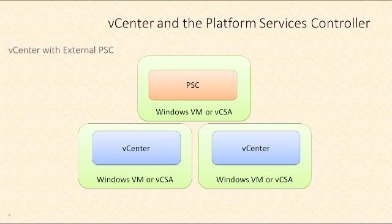Our second deployment option is vCenter with an external platform services controller. We can break out the PSC as an independent machine, and this configuration allows multiple vCenter servers to link to a shared PSC. This is ideal if multiple vCenter servers need to be linked, so functions like single sign-on and license management can be shared across multiple vCenter instances. This is supported on both the Windows and vCenter server appliance versions.